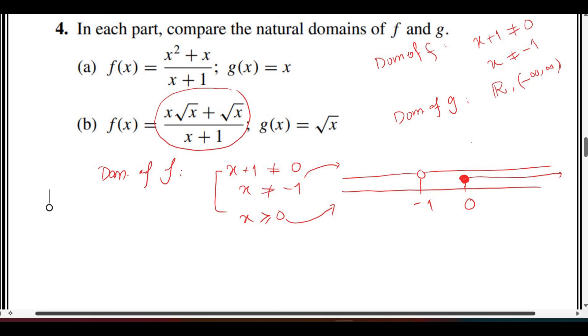The intersection gives us the domain of f as x greater than or equal to 0, or from 0 to positive infinity. This is the same for g of x. The domain of g is also x greater than or equal to 0, since whatever is inside the square root must be non-negative. So both have the same domain.